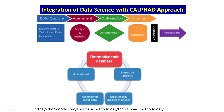Any kind of CALPHAD calculation requires you to first capture data. Data can be captured either from experiments or from other types of calculations. Once you capture the data, you need to make a good initial assessment of it, which sometimes requires pre-processing. After that, we do optimization of the data, and finally the optimized data is stored.